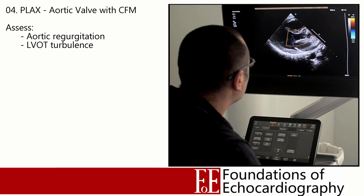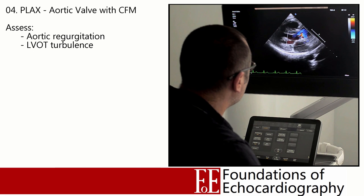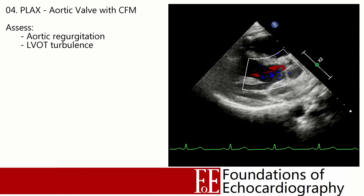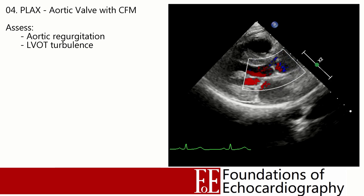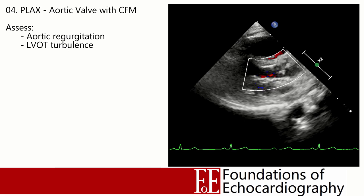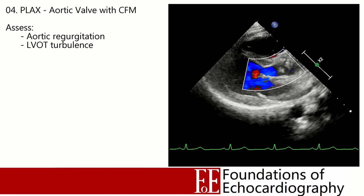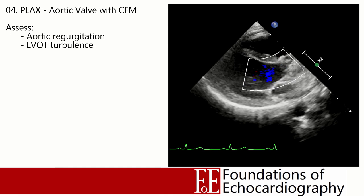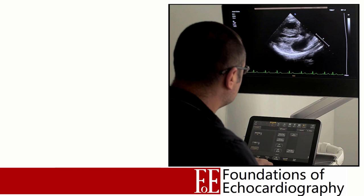Now we're going to use colour flow mapping for the first time. We create a colour box and place it over the aortic valve, extending over the left ventricular outflow tract where any regurgitation will appear. The box needs to be large enough so that the valve leaflets are within it at all times and it extends into the LV cavity. If a regurgitant jet extends beyond the limits of the box, make the box bigger. Once centred, pan through the valve by tilting from one extreme to the other — if a regurgitant jet is off-centre, you may miss it without panning.